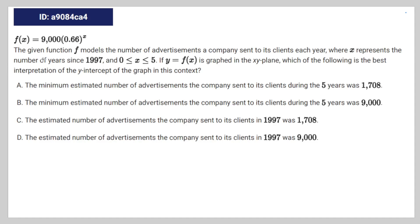Alright, we have this algebra question: f(x) is equal to 9,000(0.66)^x. The given function f models the number of advertisements a company sends to its clients each year, where x represents the number of years since 1997. If y equals f(x) is a graph in the xy-plane, which of the following is the best interpretation of the y-intercept of the graph in this context?